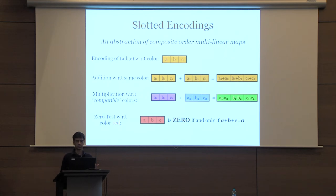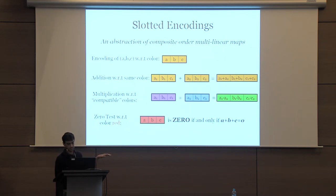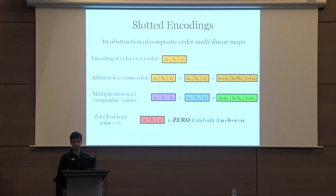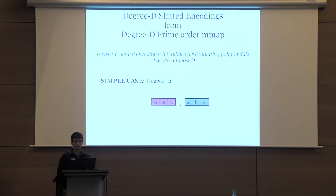Finally, there is a zero-test operation performed on encodings with respect to color red. If you have encoding (A, B, C), you say this encoding is zero if A+B+C equals zero. This last step is where it differs from composite-order multilinear maps: in composite-order m-maps, you output zero if all of them are zero. We can construct slotted encodings from degree-d prime-order multilinear maps, and define degree-d slotted encodings to be ones that allow evaluating polynomials of degree at most d in the exponents of the group.